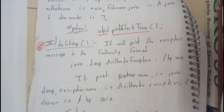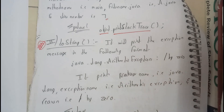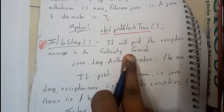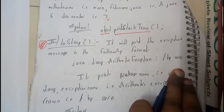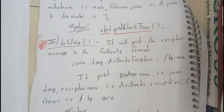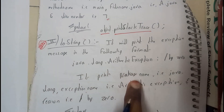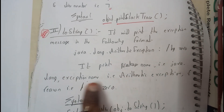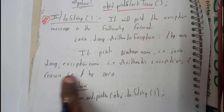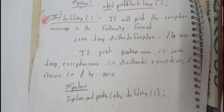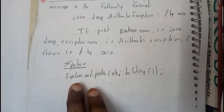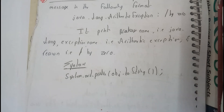Now let us go to the second method, that is the toString method - it is t-o-o, 'two' as in toString. It will print the exception message in the following format: java.lang.ArithmeticException: divide by zero. The message is a bit shorter now. It prints the package name (java.lang), exception name (ArithmeticException), and the reason (divide by zero). The syntax will be: System.out.println(object.toString()).